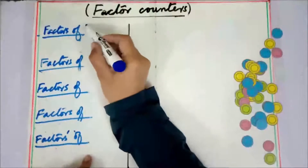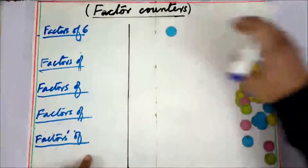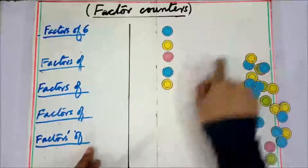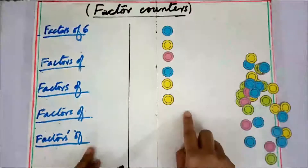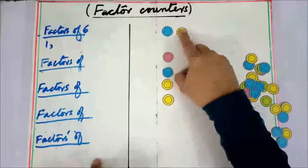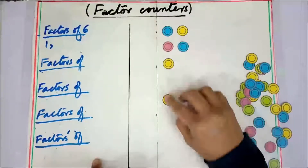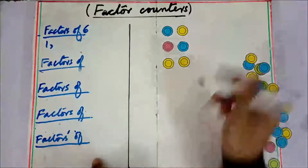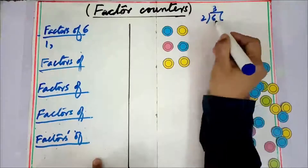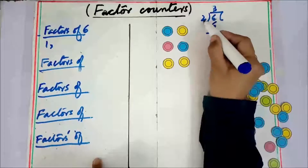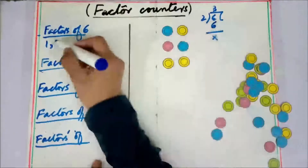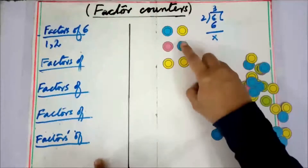Now we find the factors of six — we take six counters. Can we make groups of one? Yes, there are six groups of one, so one is a factor of six. Can we make groups of two? Yes — six divided by two is three, with no remainder, so two is a factor of six.